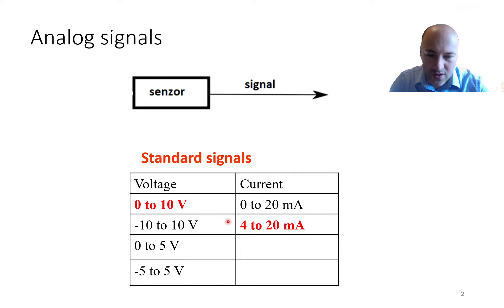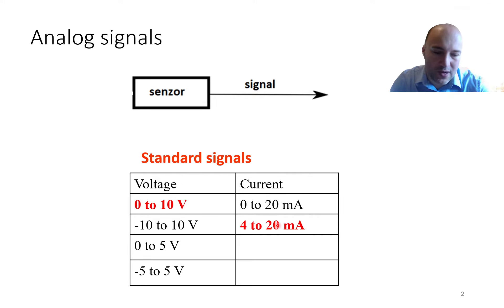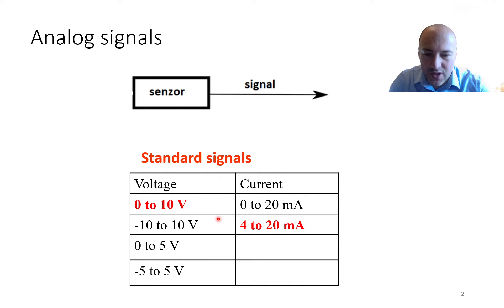The controller reads this voltage, and in the software you tell it what the signal means. For example, if you read 10 volts, that means 100 degrees Celsius. Or if you read 20 milliamps, that also means 100 degrees Celsius. In every data sheet of such a sensor you need to find some sensitivity or other information telling you how to recalculate between the actual measured variable and the signal at the output.